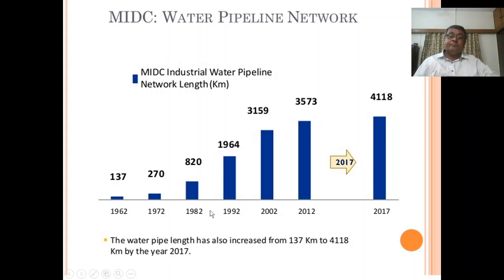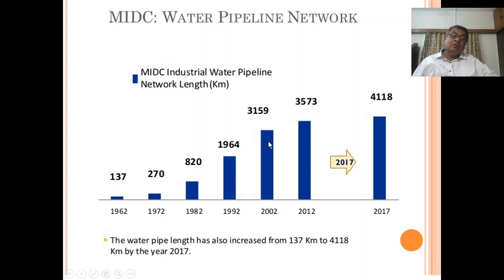Now let's see the water pipeline network in kilometers. In 1962 about 137 km of pipeline was constructed; in 1970 it was 270 km; in 1980 it was 820 km; in 1990 it was 1,964 km; in 2002 about 3,159 km; in 2012 about 3,570 km. By 2017 it has crossed nearly 4,118 km, and now as per current estimates about 4,500 km.